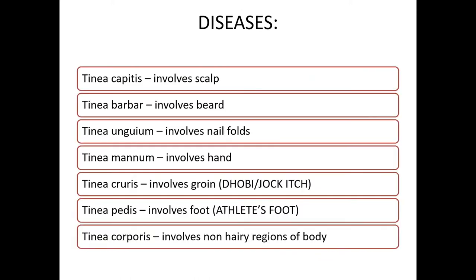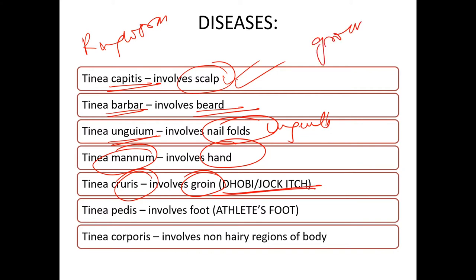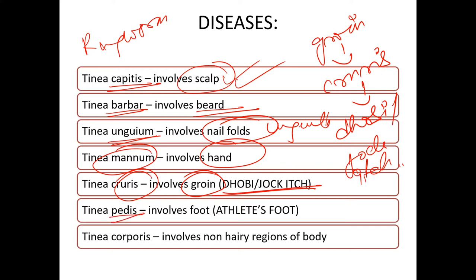Now we'll study the tinea types. Tinea capitis involves the scalp — a form of ringworm. Tinea barbae is related to the beard. Tinea unguium involves nail folds. Tinea manuum involves the hand. Tinea cruris involves the groin — also known as dhobi itch or jock itch. Tinea pedis involves the foot — also known as athlete's foot.